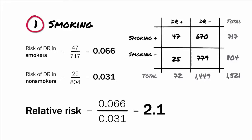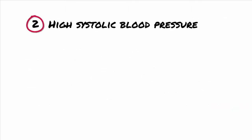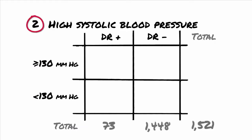This means that there is twice the risk of developing DR if you're a smoker. For our second example, let's look at the relative risk of developing DR in our study if you have high blood pressure — that means a systolic blood pressure of 130+ millimetres of mercury. Again, it is helpful to draw what is called a 2x2 table. You'll see that the numbers are not the same as for the previous calculation.